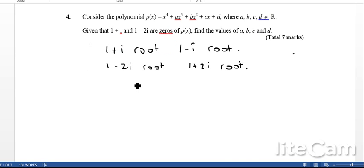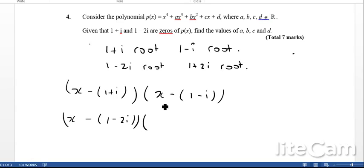So we've actually got all four of the roots already. The next step is just algebraic manipulation. I can write these four roots as (x-(1+i)), (x-(1-i)), (x-(1-2i)), and (x-(1+2i)). My polynomial will be these four brackets multiplied together.